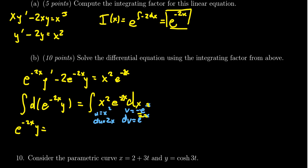We get negative one-half x squared e to the negative 2x. Then for the remaining integral, we get negative the integral of v du. The one-half cancels the 2, and the double negative resolves, giving us the integral of x e to the negative 2x dx. For that second integral, we'll need to do integration by parts again.